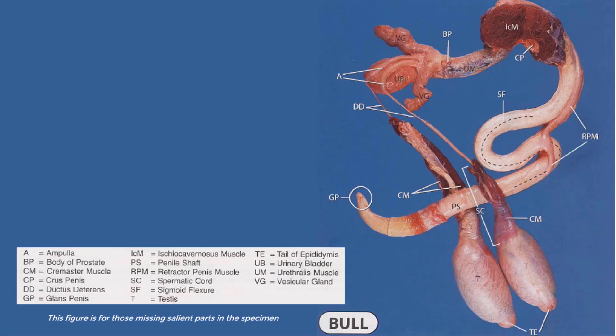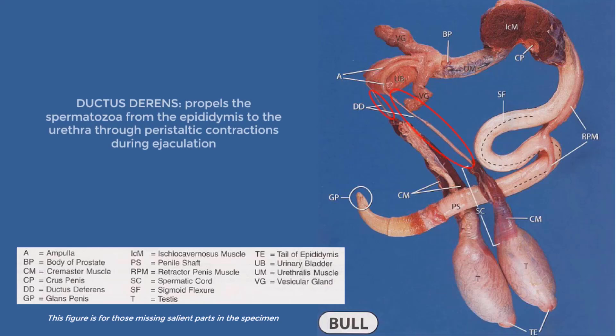Here is the figure used to explain the missing salient parts. The tubular structure coursing from the testes towards the accessory gland is the ductus deferens, which propels the spermatozoa from the epididymis to the urethra through peristaltic contractions during ejaculation.